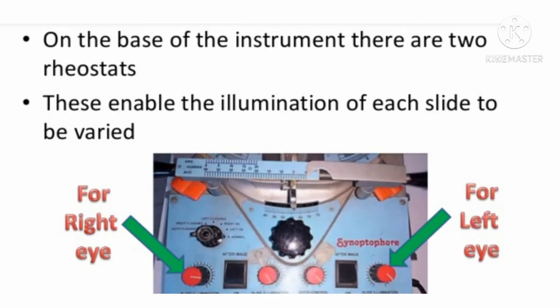Next, on the base of the instrument there are two rheostats. What they do is reduce the illumination of the slide. One is on the right side and one is on the left side.